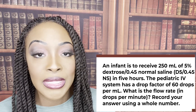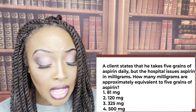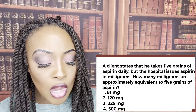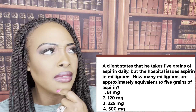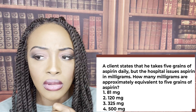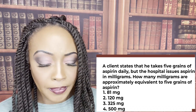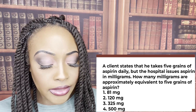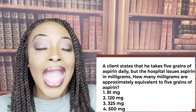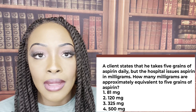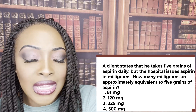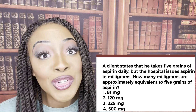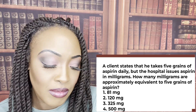A client states that he takes five grains of aspirin daily, but the hospital issues aspirin in milligrams. How many milligrams are approximately equivalent to five grains of aspirin? One grain equals 60 milligrams, so five grains equal 300 milligrams. The answer closest to 300 is 325 milligrams, which is our correct answer.